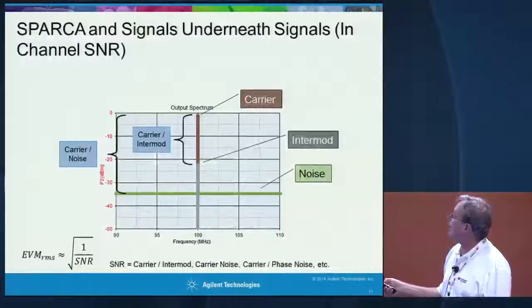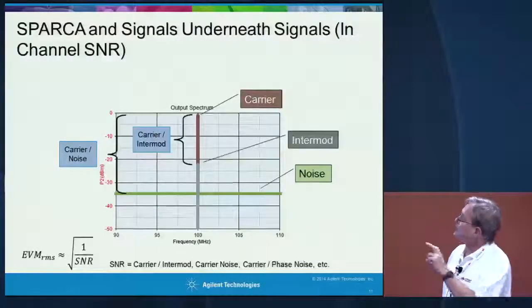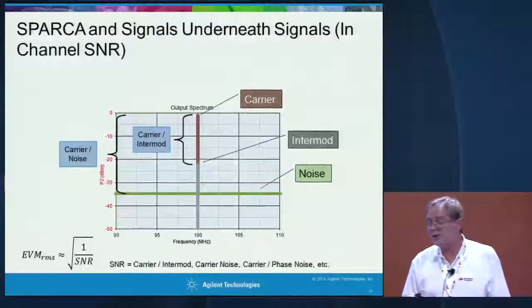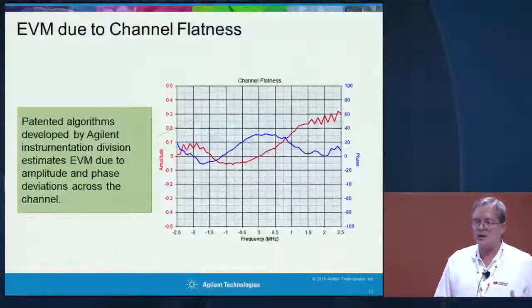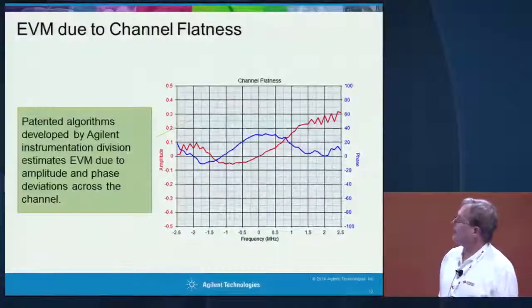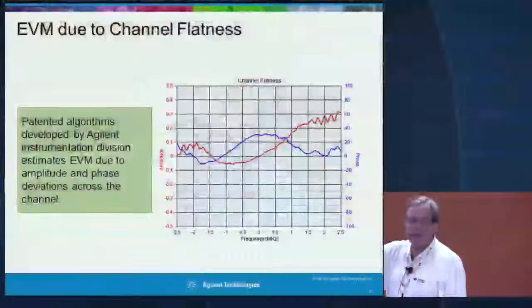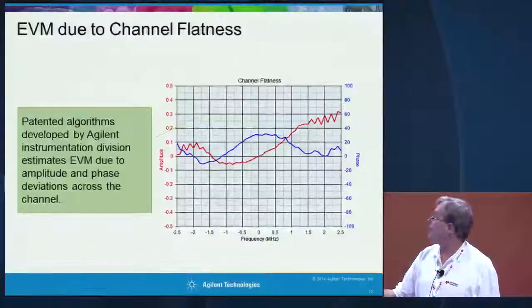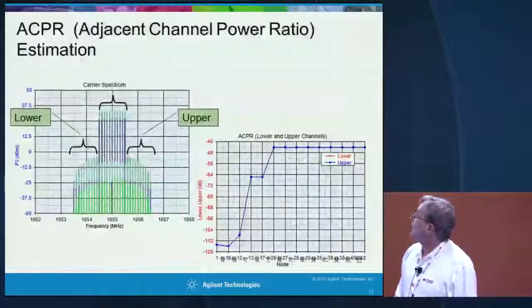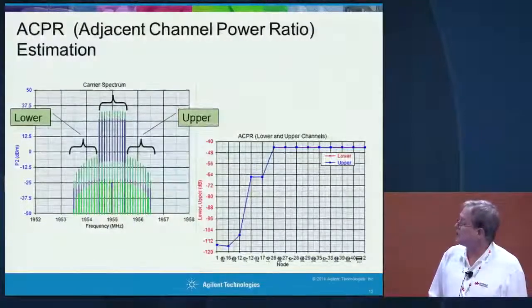In our tool it's easy to see: the gray line is the intermod, the brown line is the signal. We keep track of carrier-to-intermod ratio, carrier-to-noise ratio, and carrier-to-phase-noise ratio, all separately. For EVM there's one other piece — channel flatness. We use proprietary algorithms from the instrument group: if we have amplitude and phase variations across a bandwidth, we run them through these algorithms to estimate channel flatness. This is done entirely in the RF domain, so it's very fast.